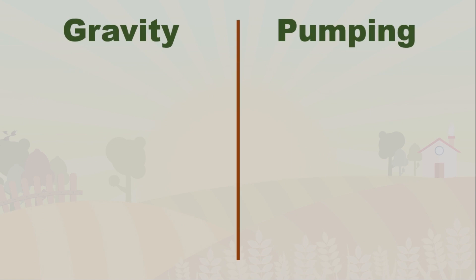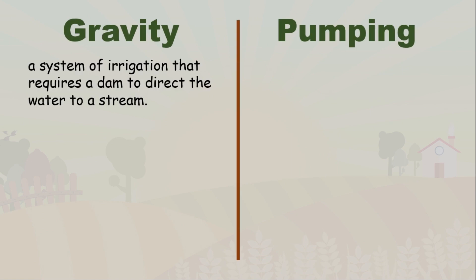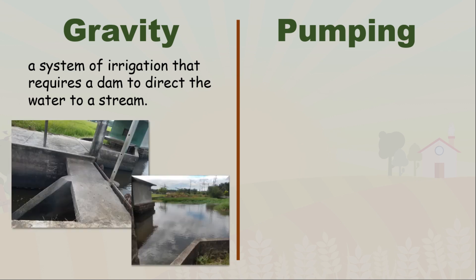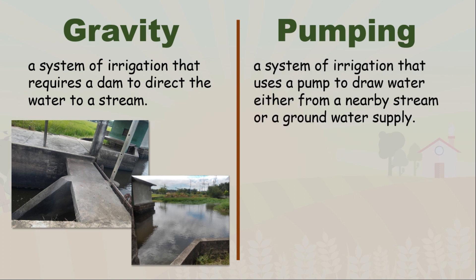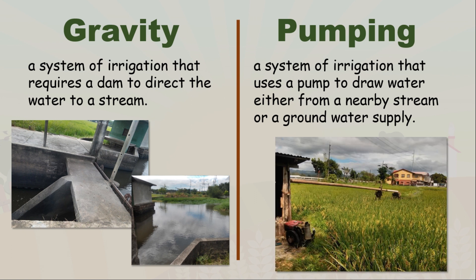The two systems of irrigation are gravity and pumping. Gravity irrigation requires a dam to direct water from a stream — the dam controls the flow of water to the field. Pumping irrigation uses a pump to draw water from a nearby stream or groundwater supply.